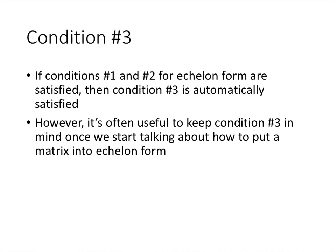A quick note about condition 3: it turns out that if conditions 1 and 2 are satisfied — the zero rows always being at the bottom and the leading entries always going to the right — then condition 3 is automatically satisfied. We don't ever have to worry about the zeros underneath the leading entries if conditions 1 and 2 hold. However, we'll leave condition 3 on our list because it's useful to think about when performing the row operations needed to put the matrix into this form.